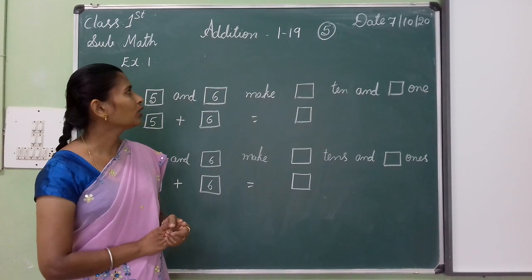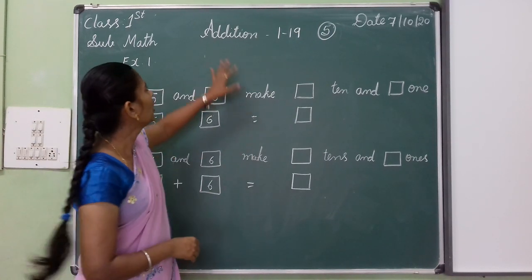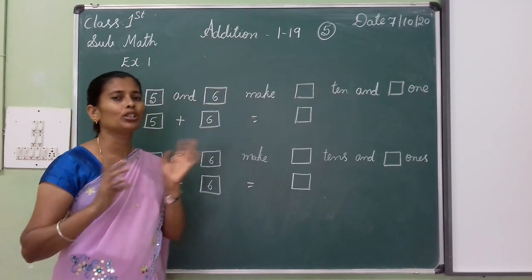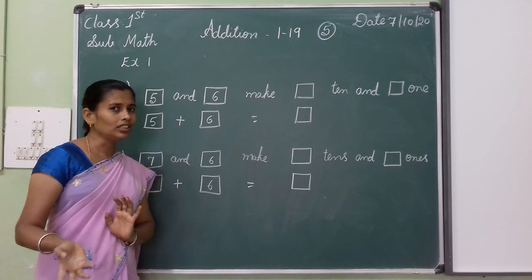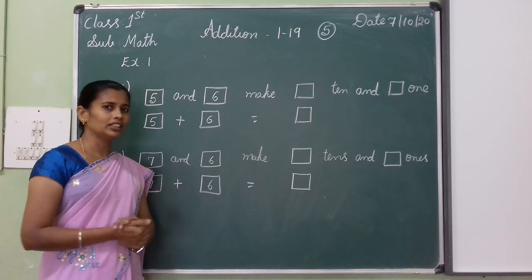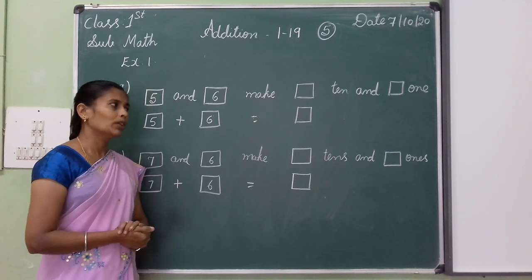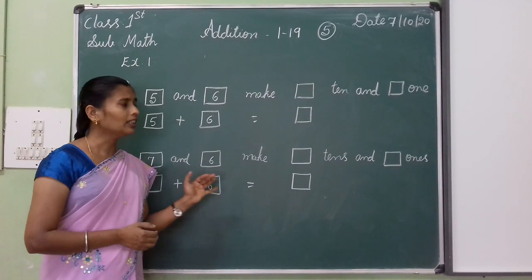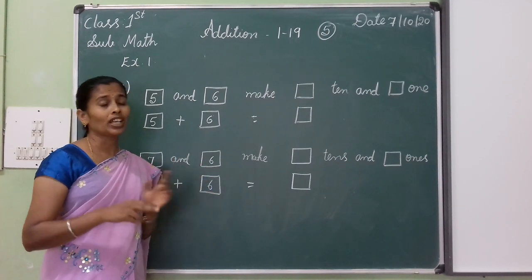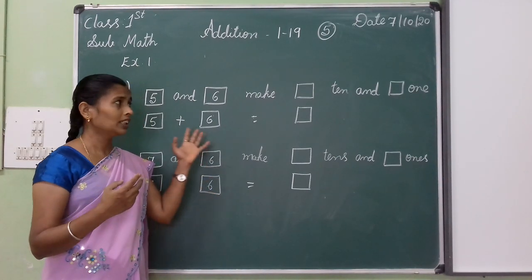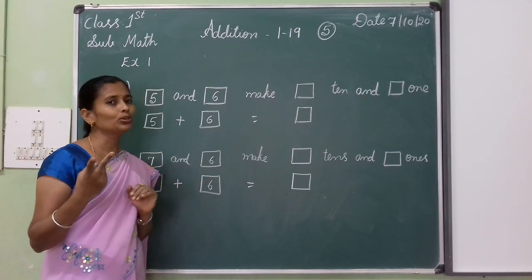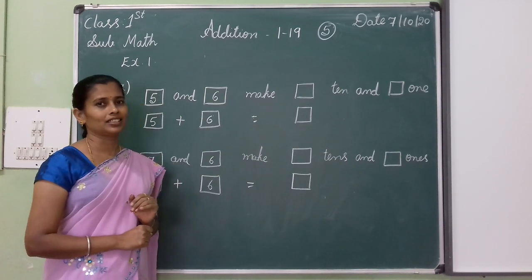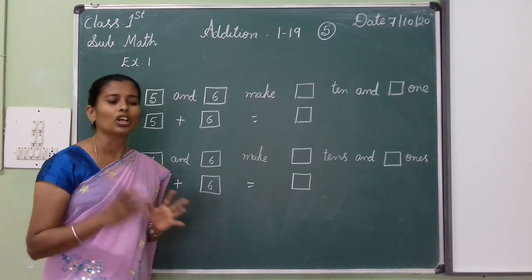Today we are going to learn a new chapter: Addition. Addition 1 to 19. You already learned addition, children, but today we are going to learn addition when we have two numbers and we get double digit answers.